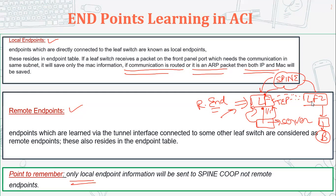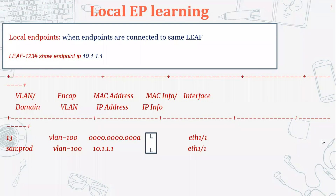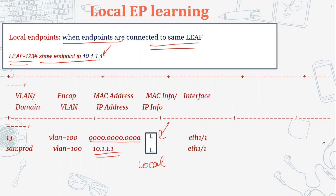Remote endpoints will not be reported to the spine switch. If a leaf switch learns about a remote endpoint's MAC address, it will not report this to the spine — only local endpoints are reported to the spine switch. When endpoints are connected to the same leaf, they are local endpoints. In the CLI output of 'show endpoint ip', if the letter 'L' appears next to a MAC or IP address, it means that endpoint is learned as a local endpoint — directly connected to that particular leaf switch.